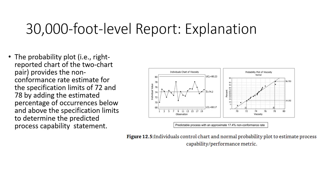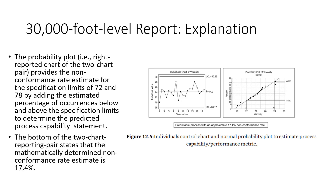The probability plot, which is used to calculate the statement at the bottom of the chart, evaluates the percentage estimated below 72 and that above 98. It combines those percent values to make the statement at the bottom of the chart. For this particular situation, we'd have a 17.4% non-conformance rate.